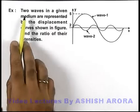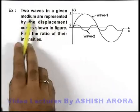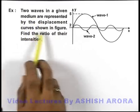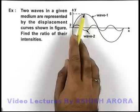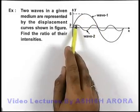In this example we are given that two waves in a given medium are represented by the displacement curve shown in figure. We can see that wave 1 is having an amplitude 5 and wave 2 is having an amplitude 2.